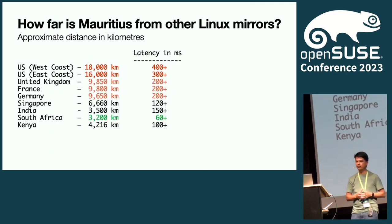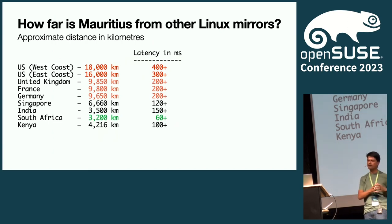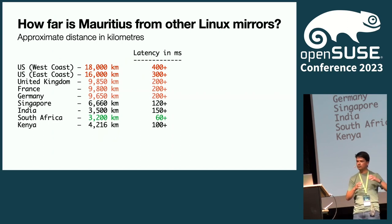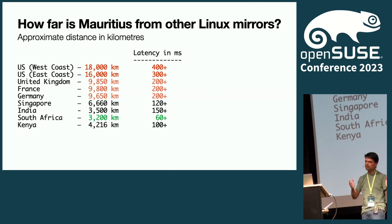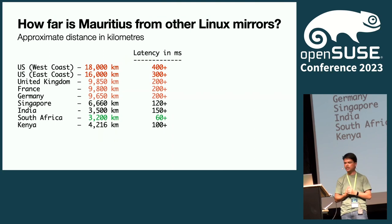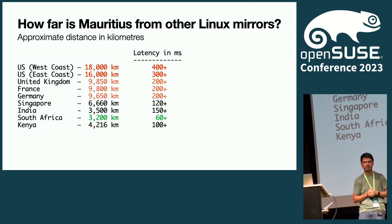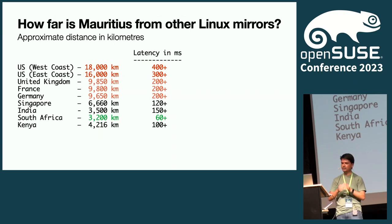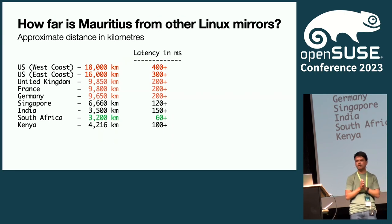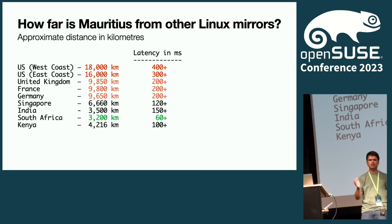For example, if we need to reach servers in the United States, the distance from Mauritius to the west or east coast is about 16,000 to 18,000 kilometers — latency of 300 to 400 plus milliseconds. Central Europe is 9,000 to 10,000 kilometers away, latency 200 plus milliseconds. The closest is South Africa, about 3,000 kilometers, with latency of 60 to 80 milliseconds.